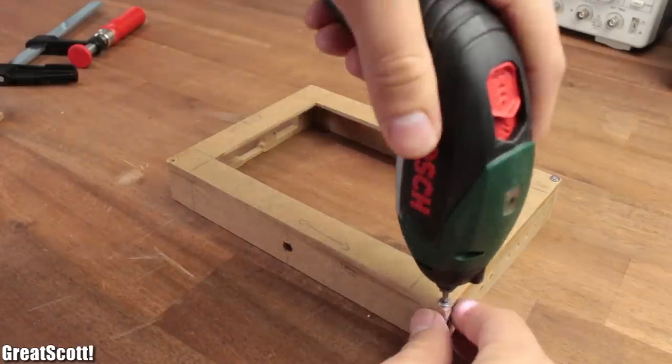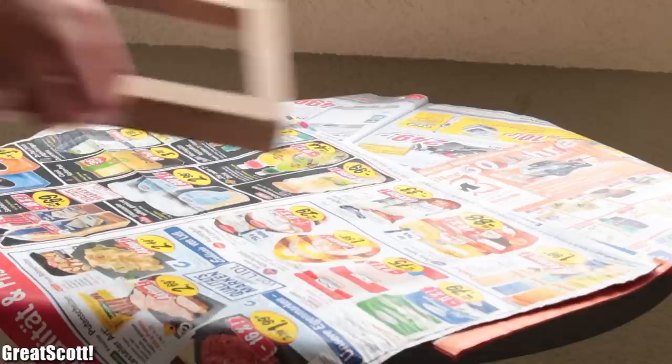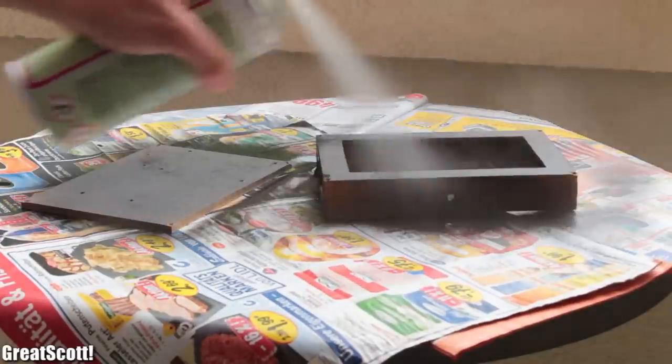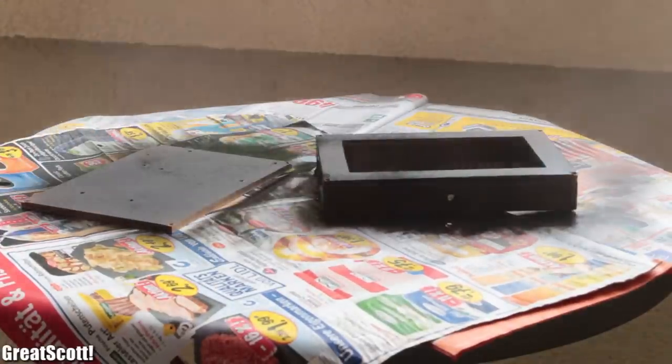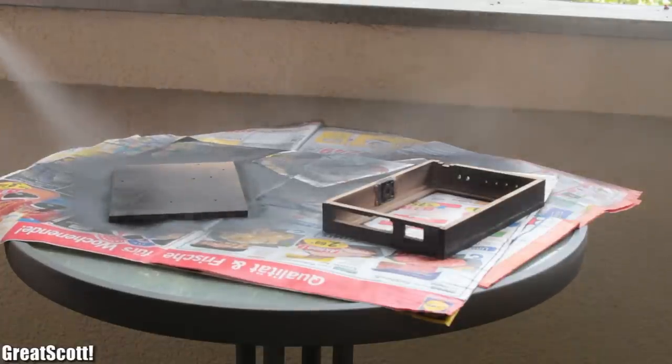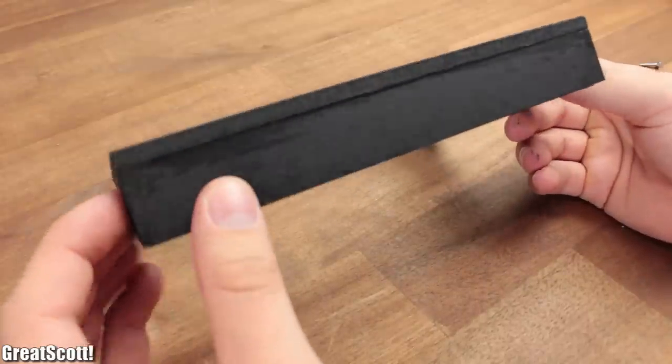Then I removed the small screws from the front plate and went outside to spray paint my case with 3 layers of coating. And just as a tip to myself it would be smart to remove the excess glue with sanding paper before spray painting the whole case otherwise it looks like this.